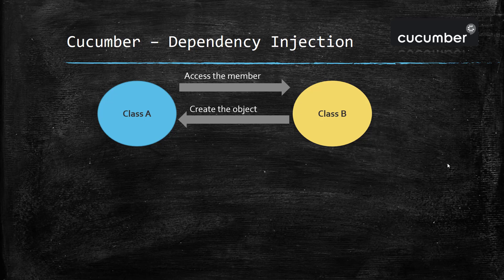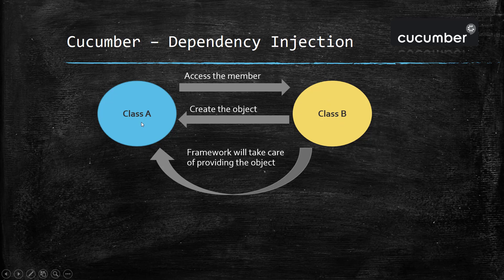In this scenario, Class A depends on Class B for its own calculation. Now in case of dependency injection, the framework will take care of creating the object and providing it to the dependent class.